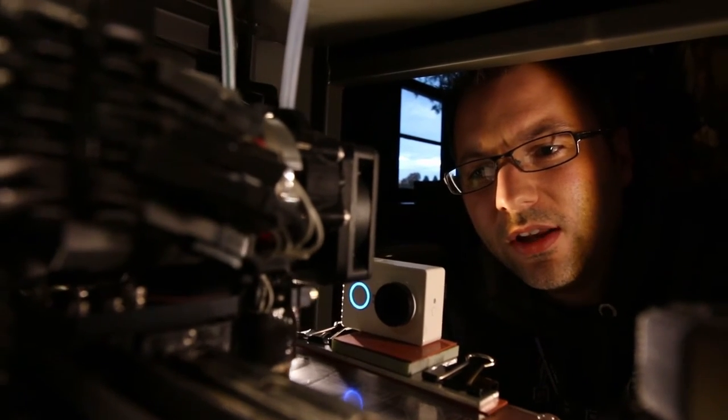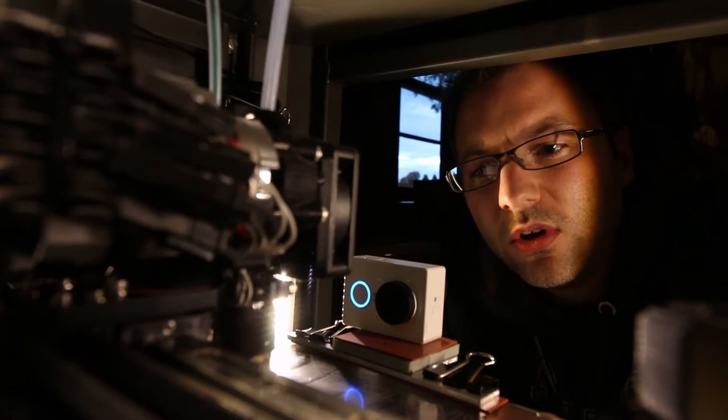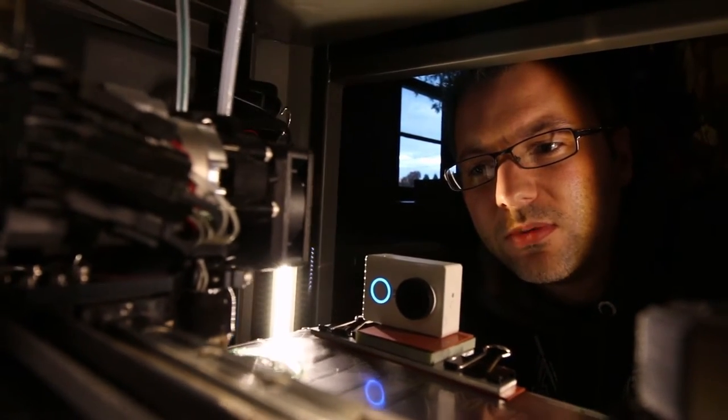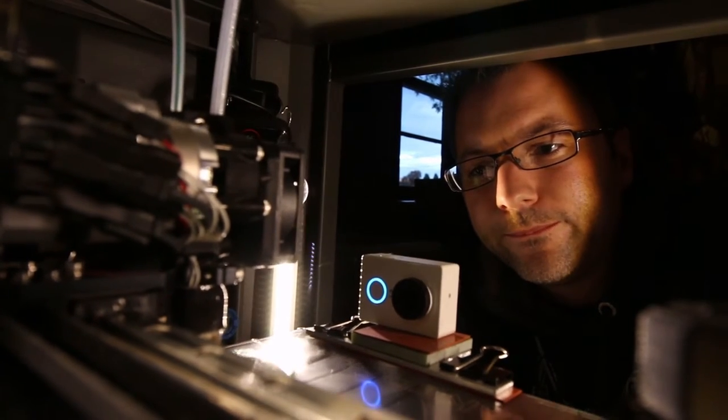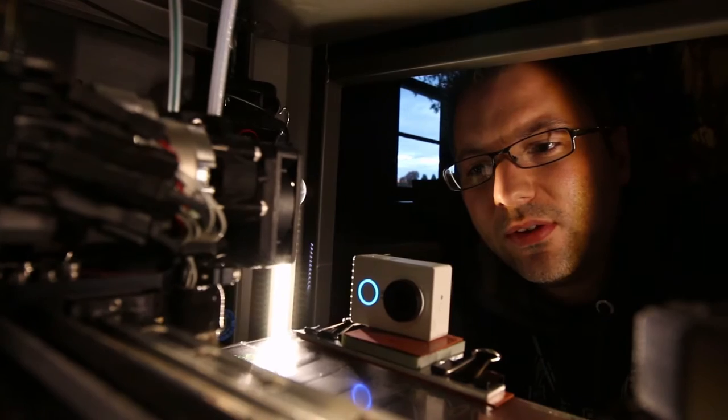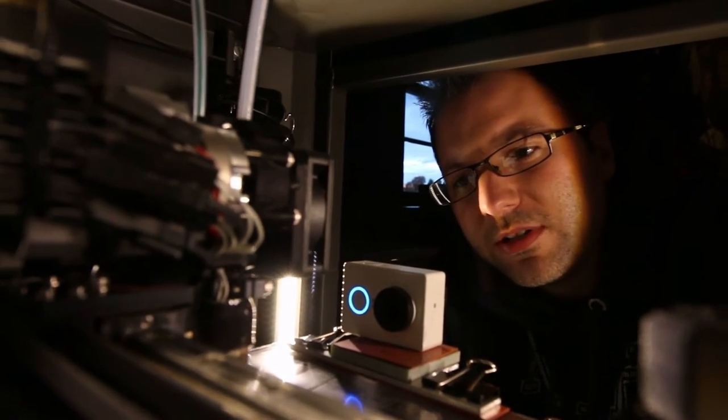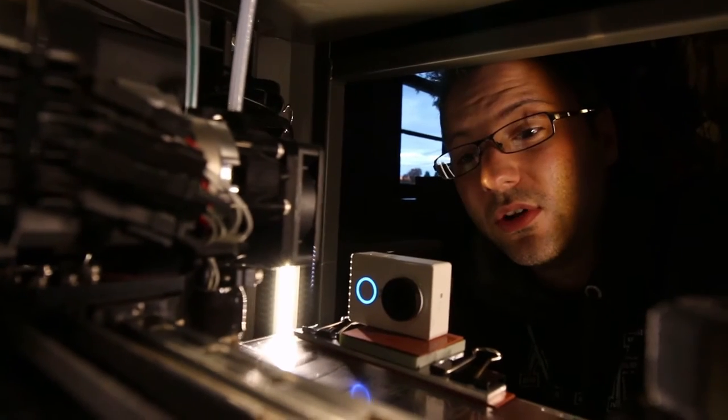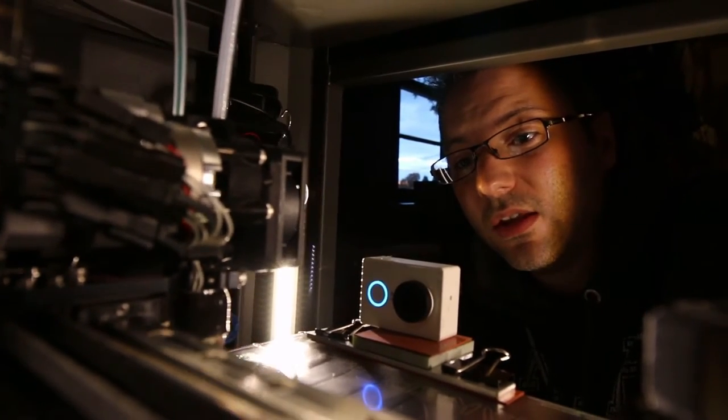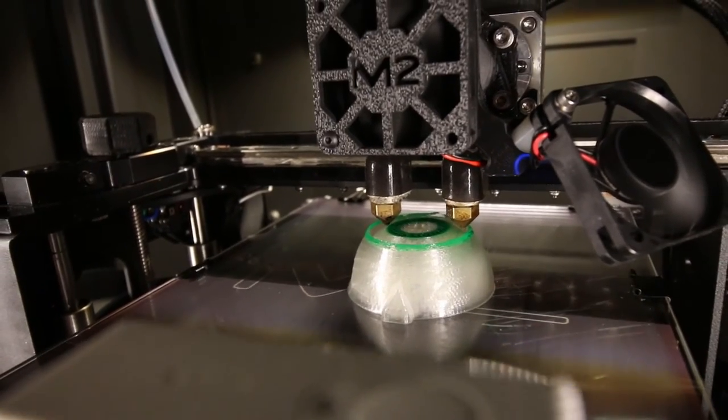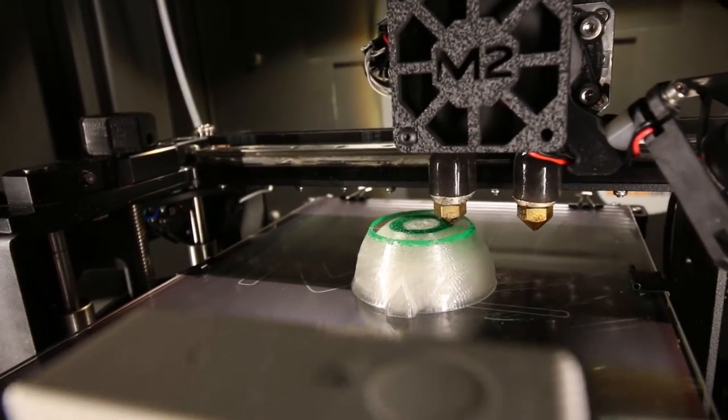The benefit of an ooze shield is that inevitably one extruder is going to ooze a little bit while the primary extruder is printing. The ooze shield will catch any of those stray pieces of filament. The other benefit is that it works great to reprime the extruder. The idle extruder needs to prime itself after doing the retraction, and it primes itself while printing the ooze shield.